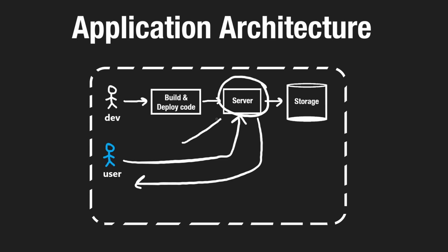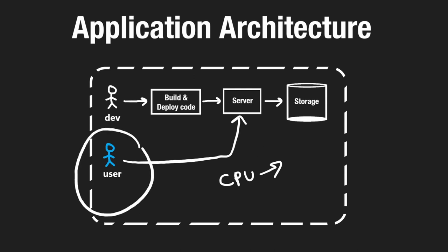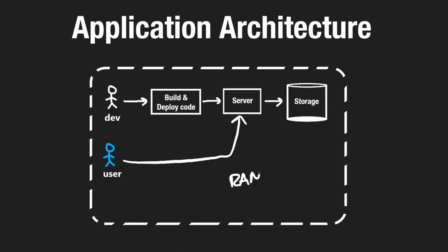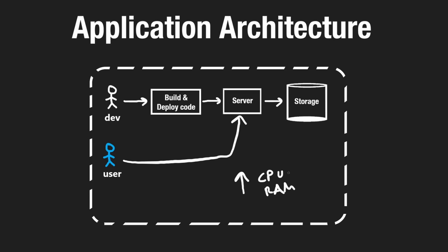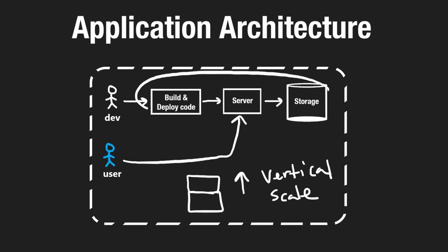We could determine the bottleneck: maybe the CPU is too slow, or we need more RAM. We could upgrade the server's CPU, RAM, or disk — this is vertical scaling: taking a single resource and making it better. It's conceptually simple — to handle more traffic, we get a better server. But computers have limitations; no matter how fast the CPU, it won't handle infinite requests.